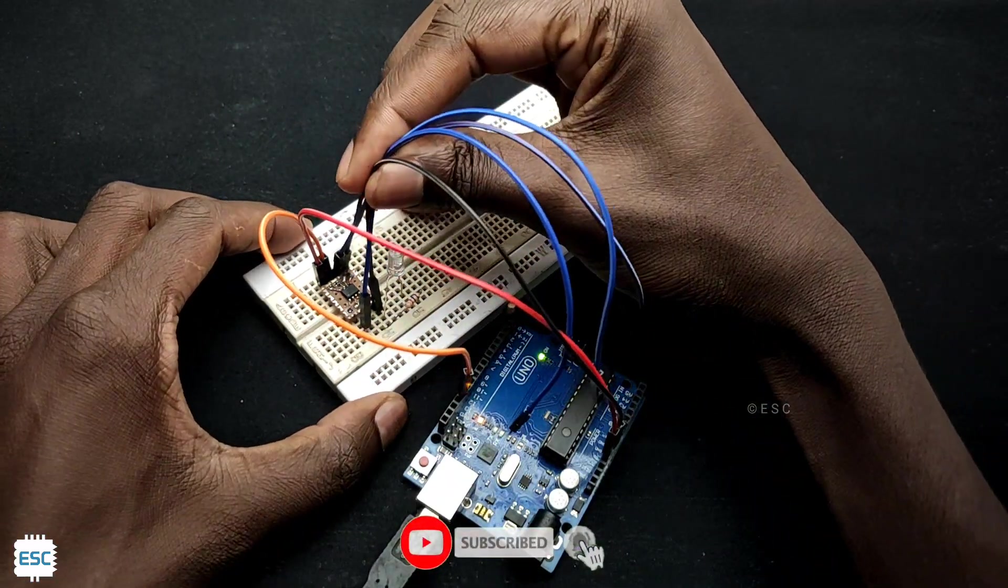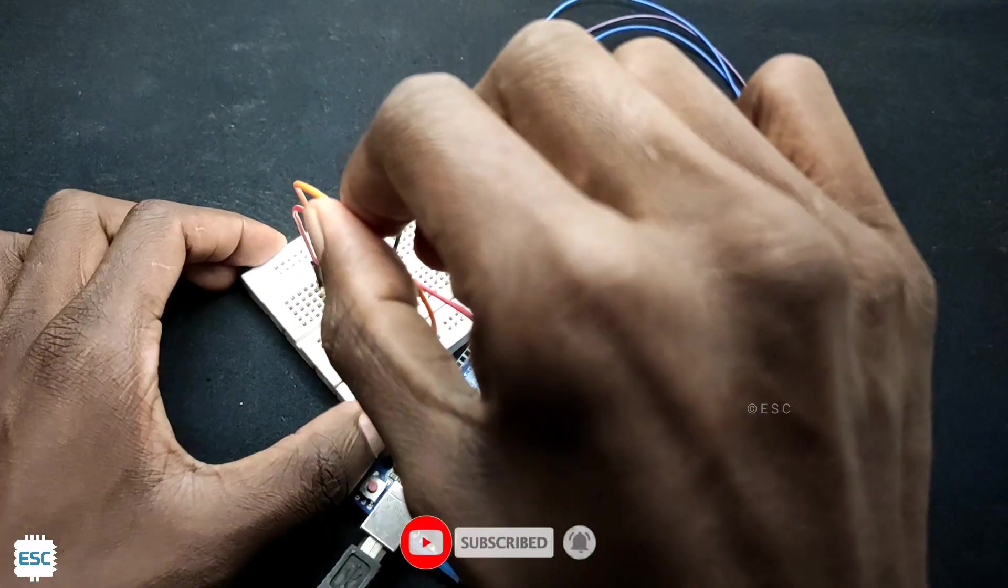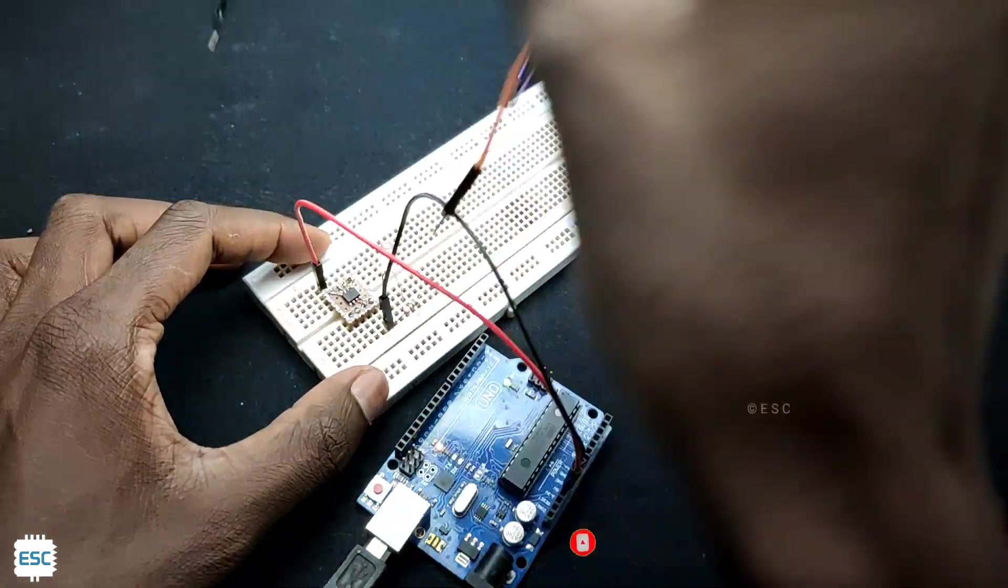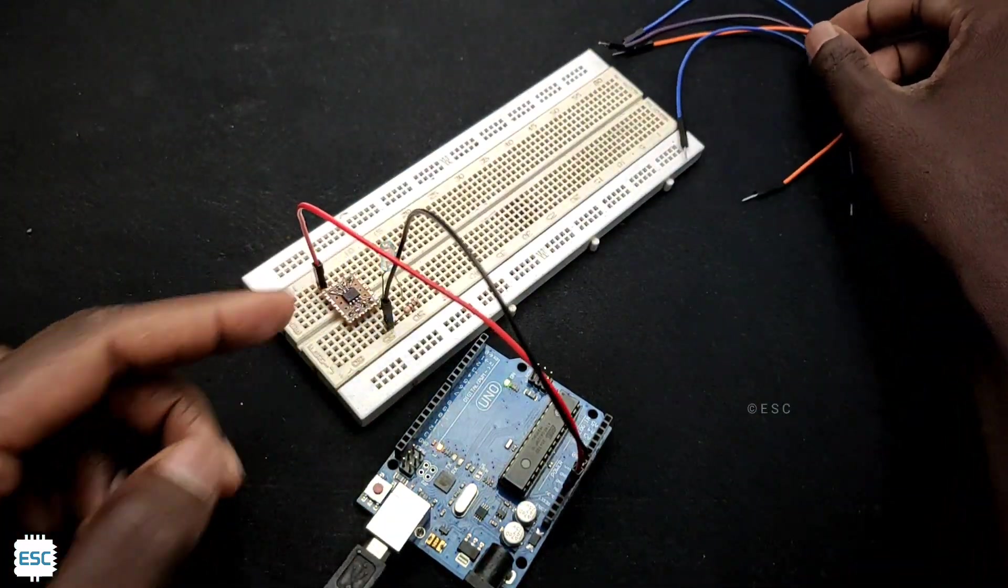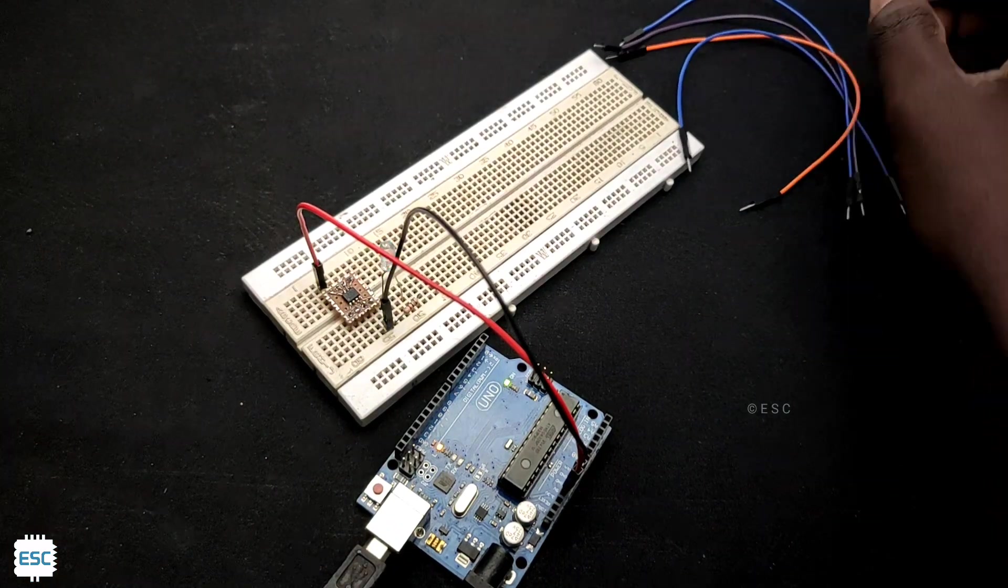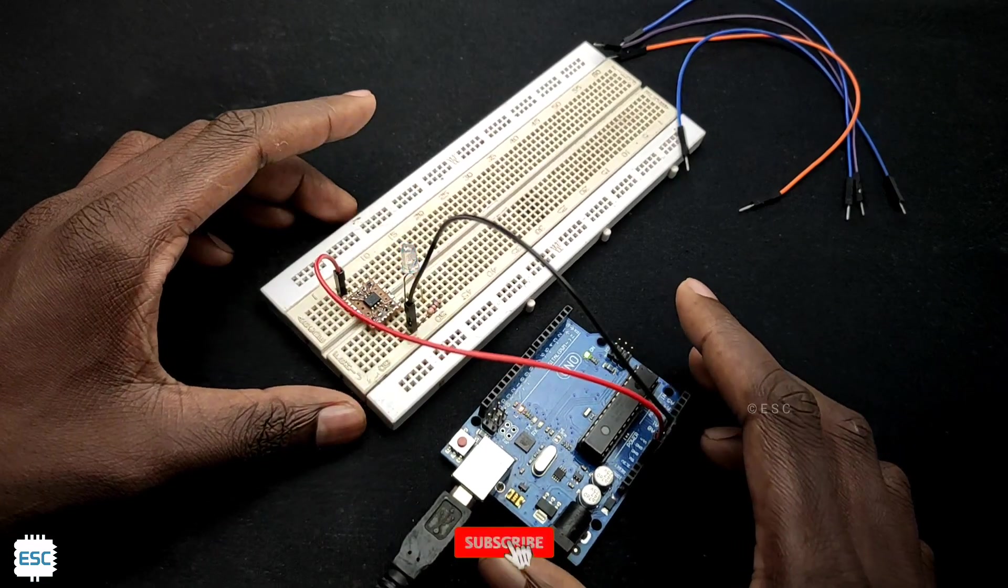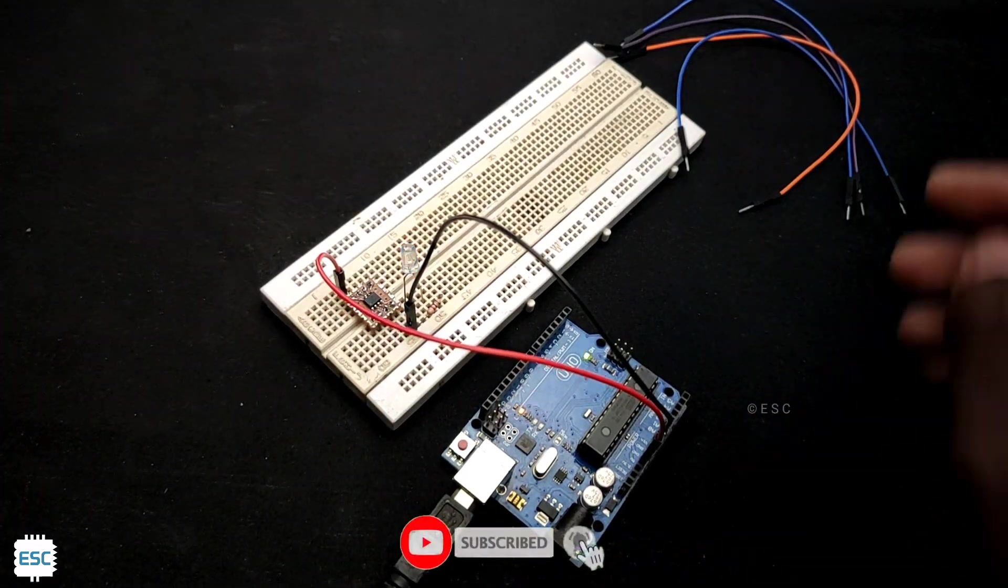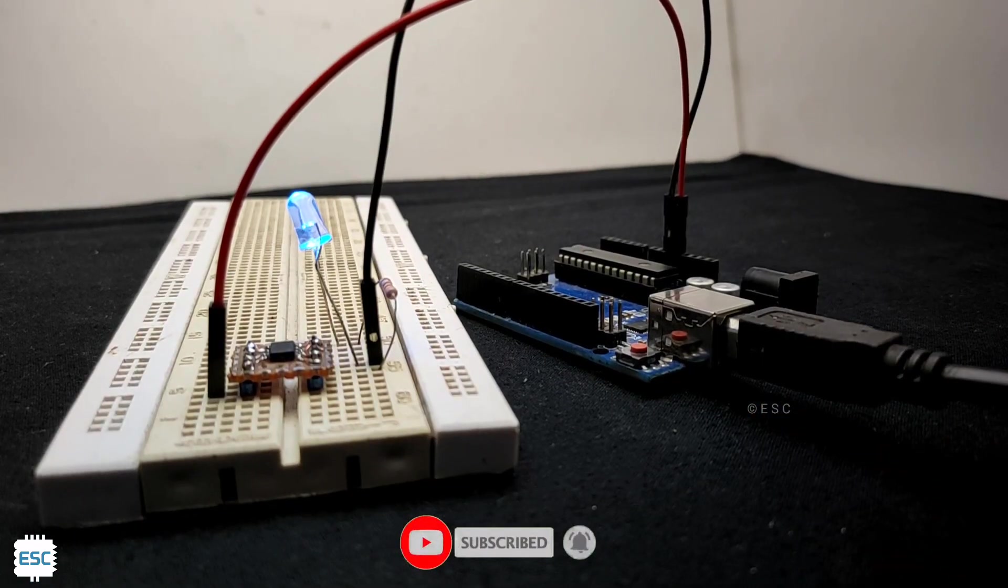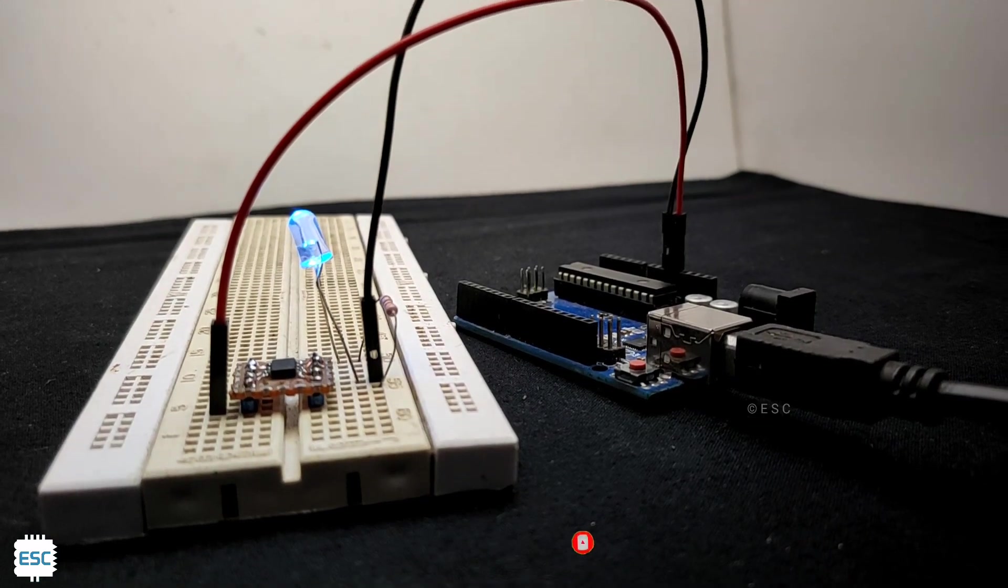Now we can remove all jumper wires except the power wires. We can see everything is working perfectly. So that's all about today. Hope you enjoyed and learned something from my video. If so, please like, share, and subscribe. I will see you next time.